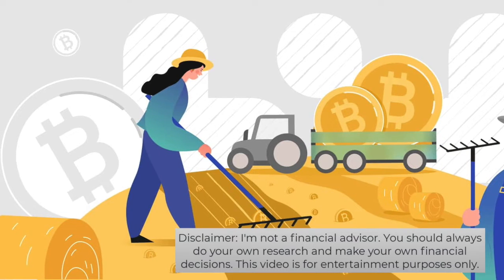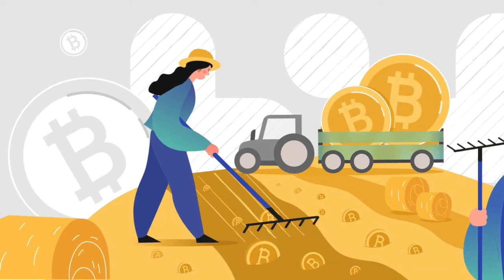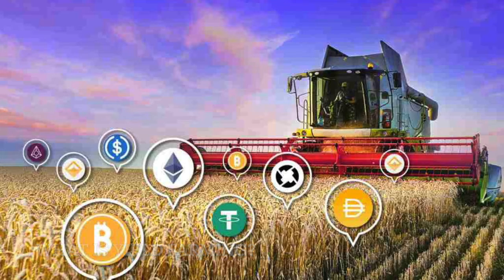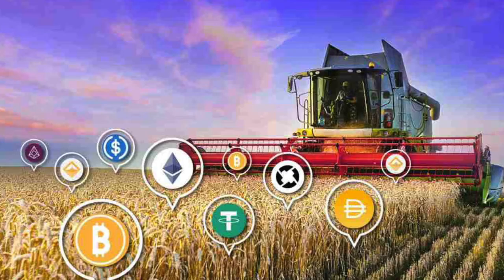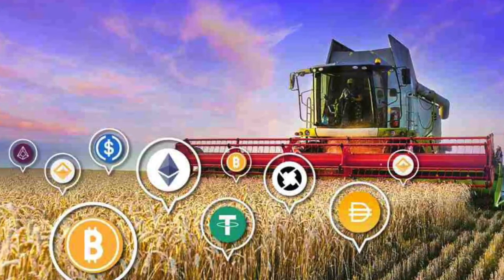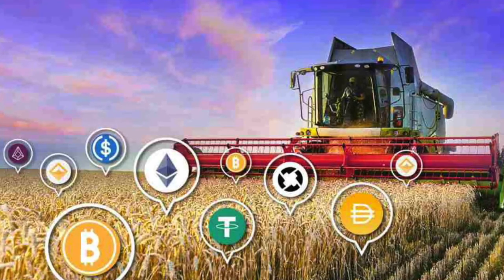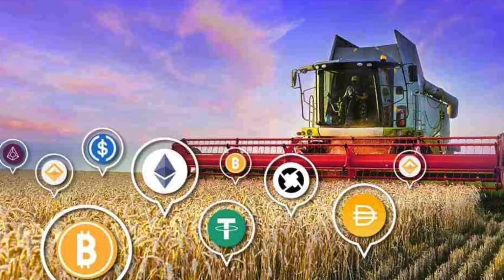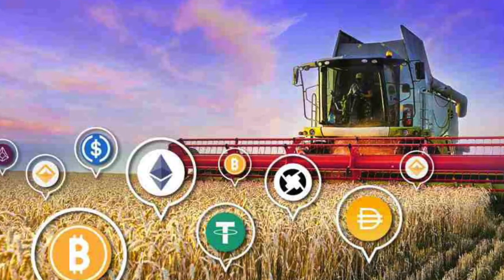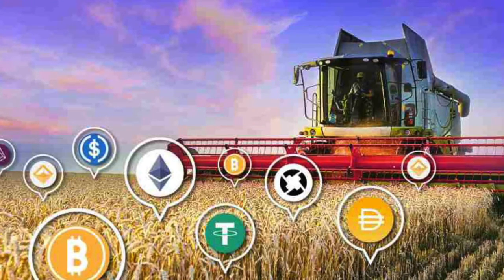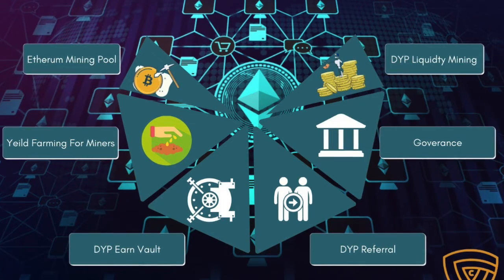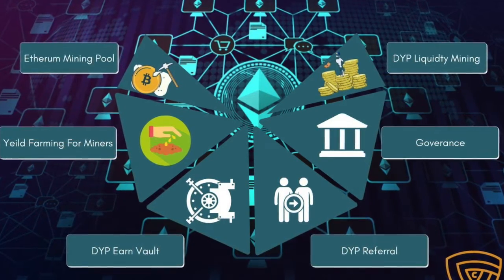What is yield farming? Yield farming is a means of earning interest on your cryptocurrency, similar to how you would earn interest on money in a savings account. Similarly to depositing money in the bank, yield farming involves locking up your currency — called staking — for a period of time in exchange for interest or other rewards such as more cryptocurrency.